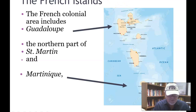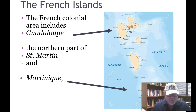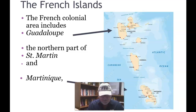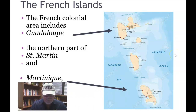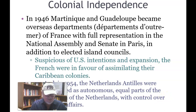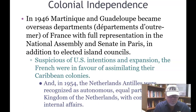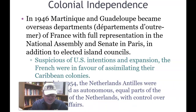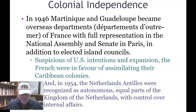Here's a picture of the French islands, which includes Guadeloupe on the north side of the map. Guadeloupe is actually nearly divided into two twin islands. Then you have Dominica in the middle, which belongs to Great Britain, and Martinique at the bottom. In 1946, Martinique and Guadeloupe became overseas departments of France with full representation in the National Assembly and the Senate in Paris, in addition to elected island councils. Suspicious of U.S. intentions, the French were in favor of assimilating their Caribbean colonies. In 1954, the Netherlands Antilles were recognized as autonomous, equal parts of the Kingdom of the Netherlands, with control over their own internal affairs.